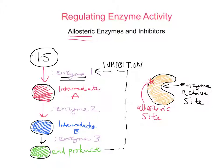Now this is reversible. When an inhibitor detaches from the enzyme, it goes back to its original conformation. So it is possible to remove whatever is bound to the allosteric site — that end product can be released, and the enzyme will return to its original conformation.